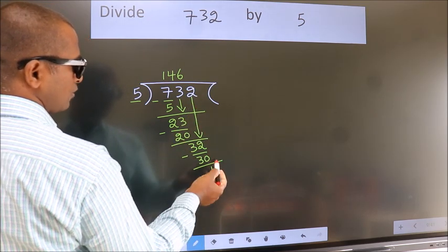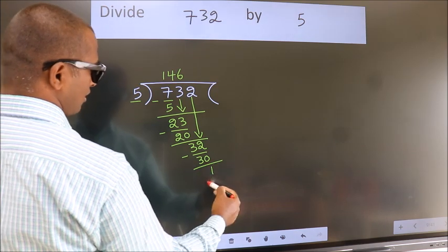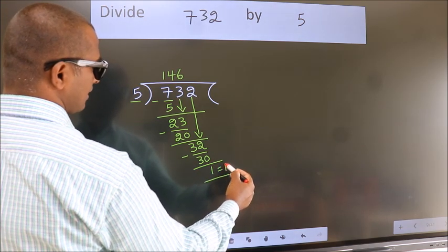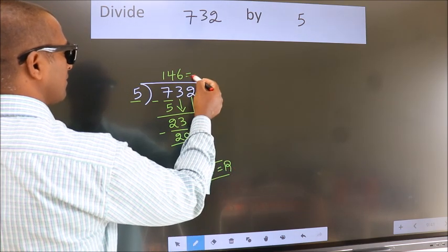No more numbers to bring down, so we stop here. This is our remainder. This is our quotient.